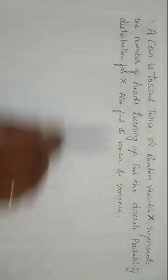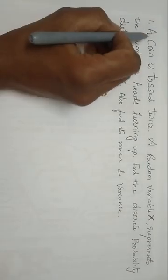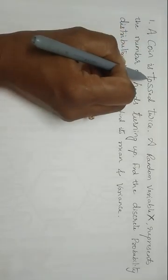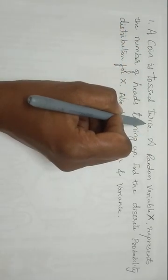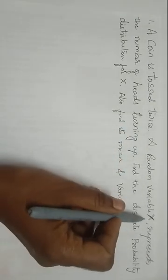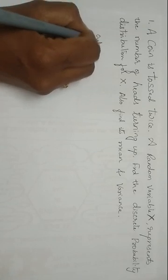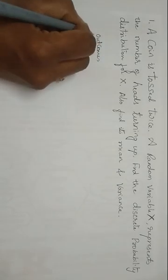So based upon the given data, let us fill up all the details. What they are saying? A coin is being tossed twice. So for doing random variable experiment, what we need? We need a sample space first or nothing but outcomes.